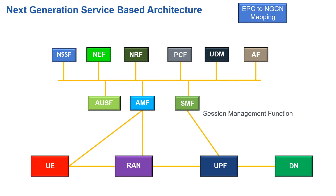Moving to the right, we have the SMF, the Session Management Function — again a hybrid of the packet data gateway, the serving gateway, and the MME, but this time from the control plane perspective. The SMF directs traffic and provides an anchor point for setting up and tearing down sessions across the network, whether for data traffic or voice traffic applications. Moving up to the top left, we have the Network Slice Selection Function. The NSSF provides the functionality of network slicing, giving us the ability to have not just one virtual network but many.